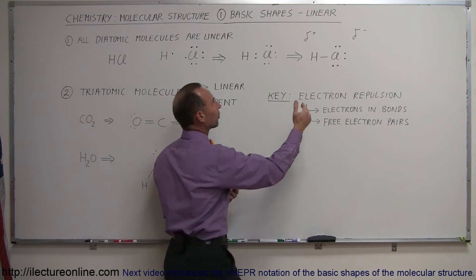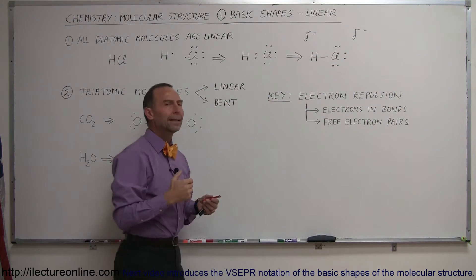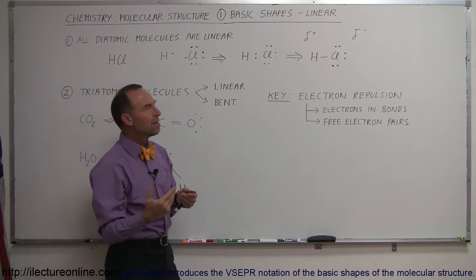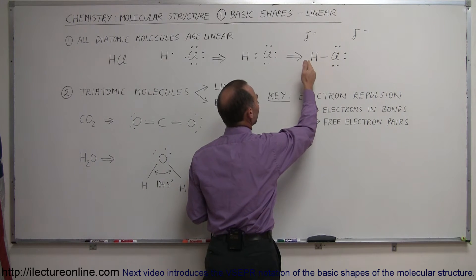Notice there are three pairs of free electrons still along the chlorine. The sharing is not even - if it was even then the two electrons would spend just as much time around the hydrogen as they do around the chlorine, but that's not really the case.